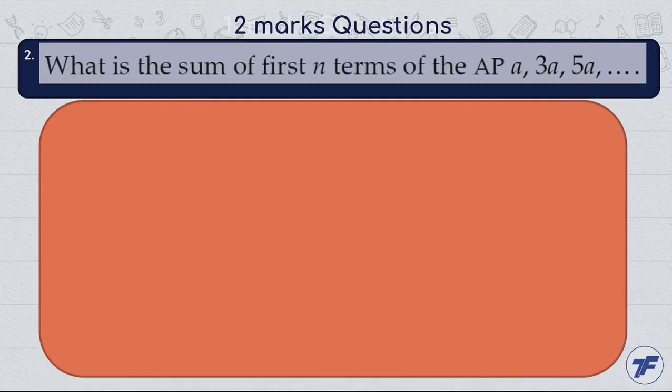Now the next question: What is the sum of first n terms of the AP a, 3a, 5a, and so on? We have a series given here where a, 3a, and 5a and so on is an AP sequence.